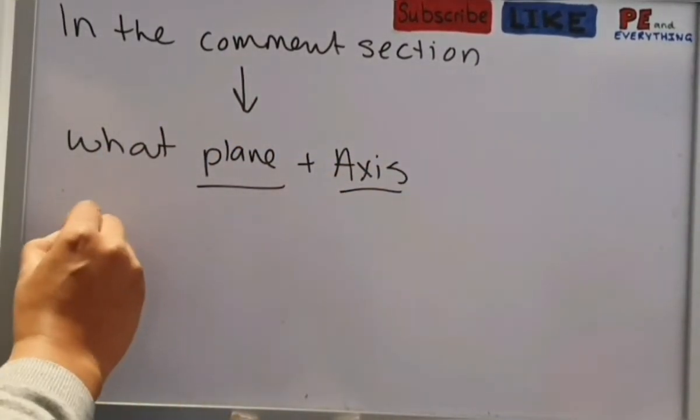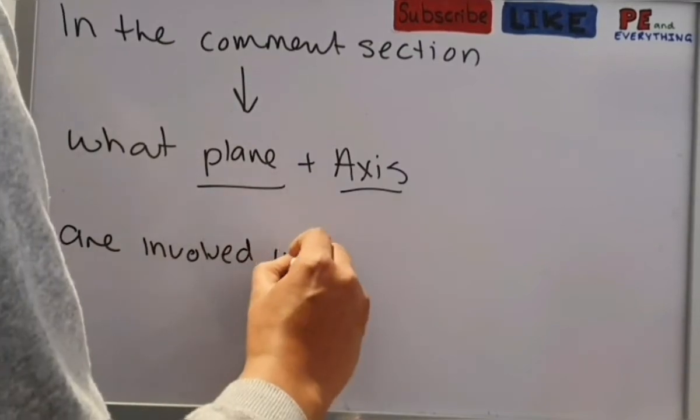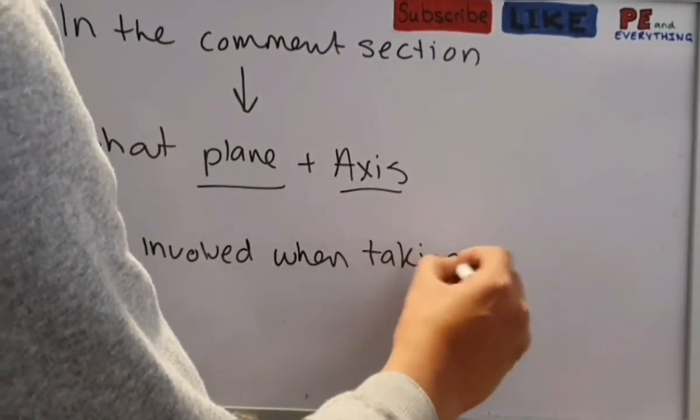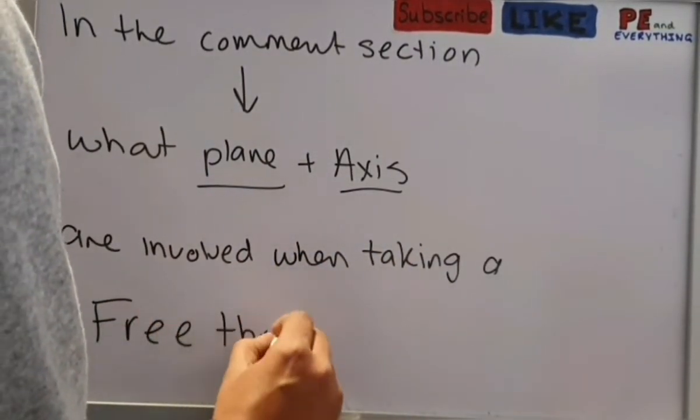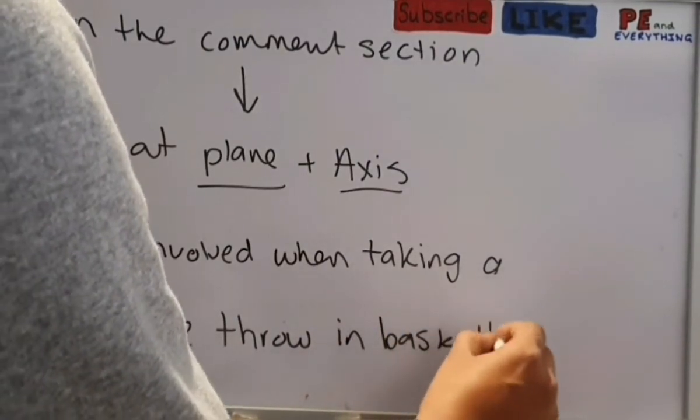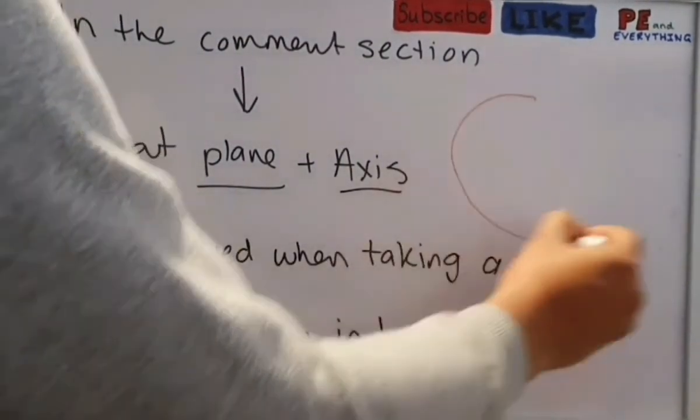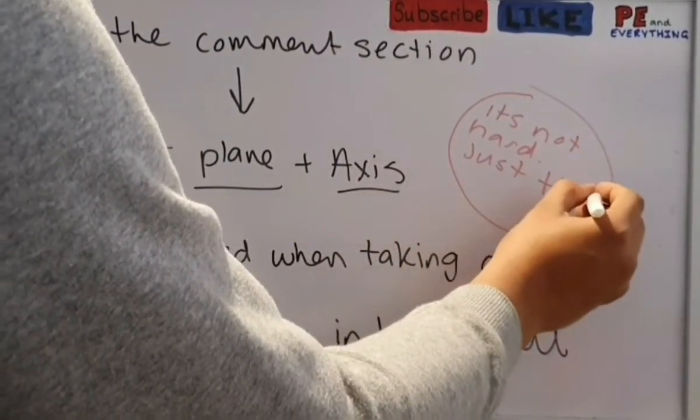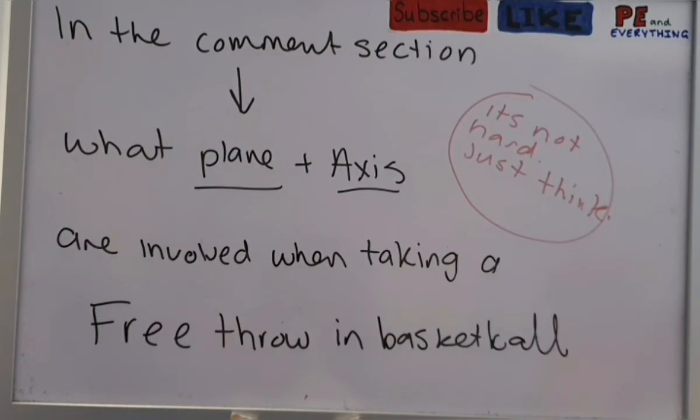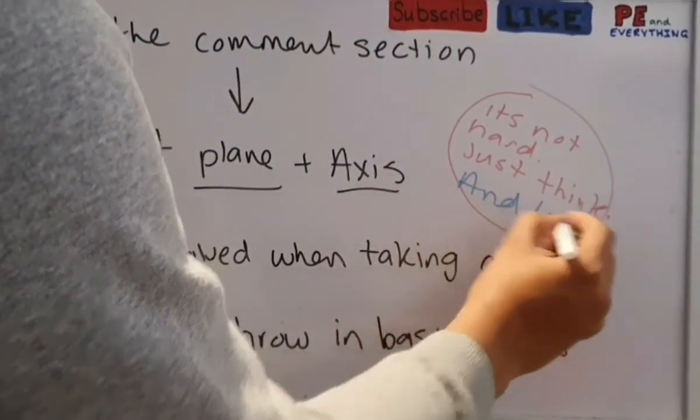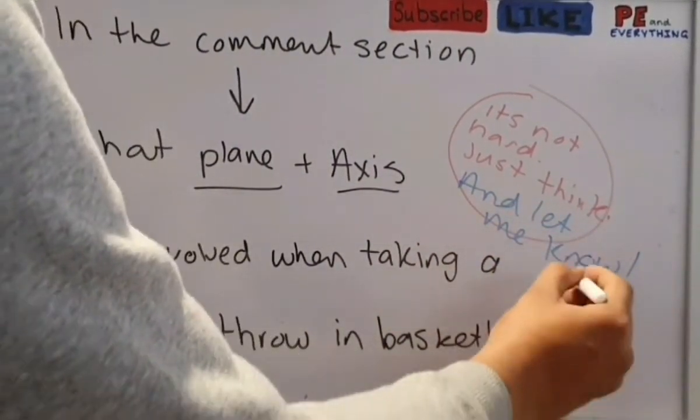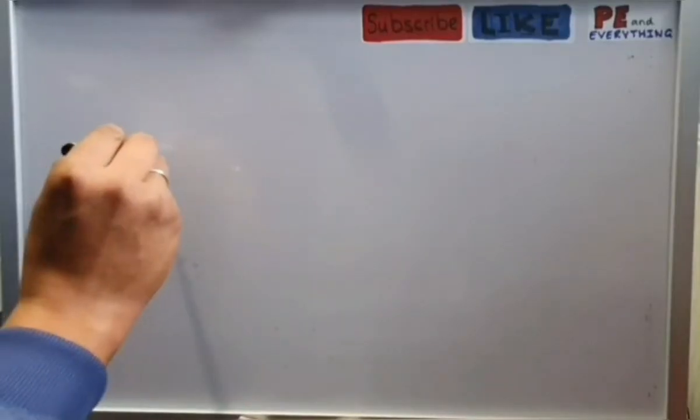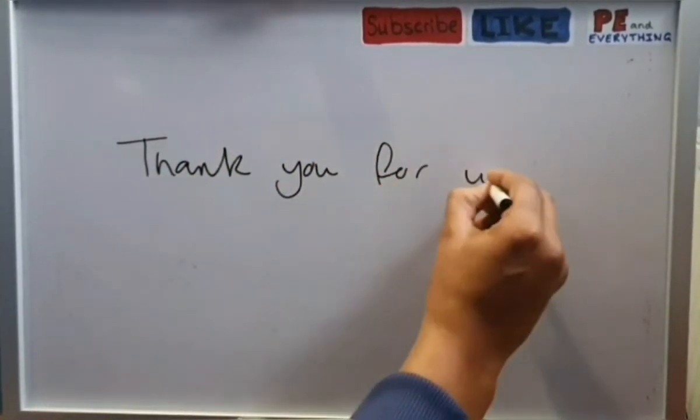Okay, so now it's your time. In the comments section below, I want you to try and figure out what plane and what axis would be involved when taking a free throw in basketball. And remember, it doesn't have to be overly complicated when you're trying to figure it out. It's not hard. Once you know the terminology and you know the principles behind it, you'll figure it out. It's perfect.